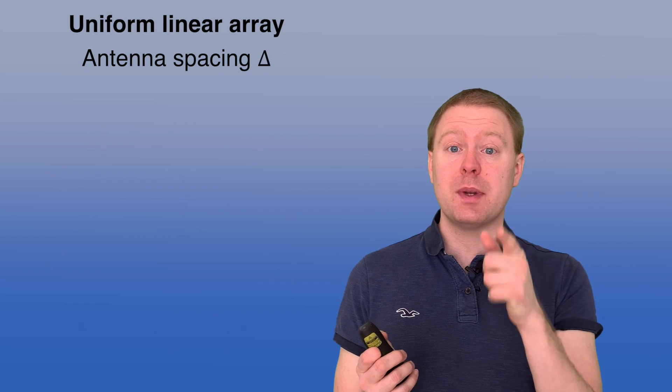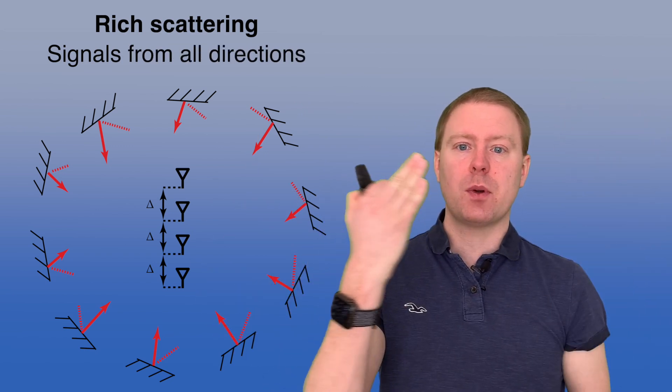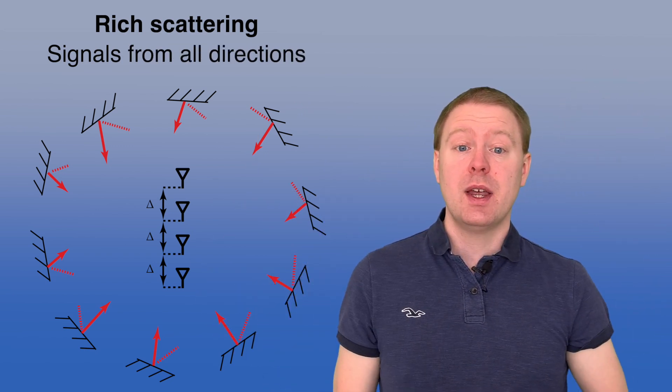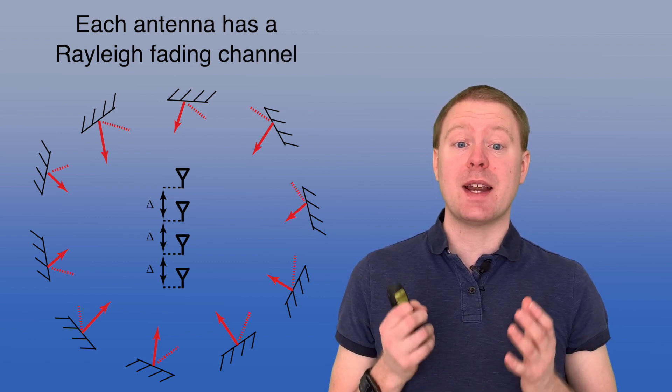We can generalize this to a MIMO case, when we have a uniform linear array. Δ is the antenna spacing. And say now that we have scattering objects all around, so signals are coming in uniformly distributed from different angles. And then if we study each element in the array individually, then by the same argument as before we will get Rayleigh fading. And they will have identical distribution because they are in the same propagation environment.